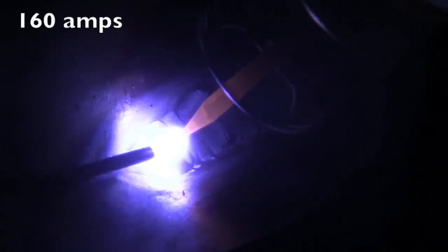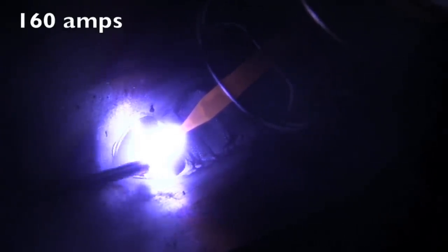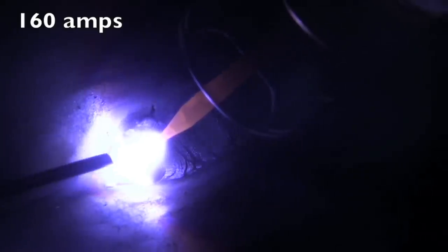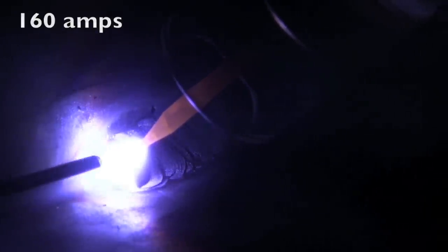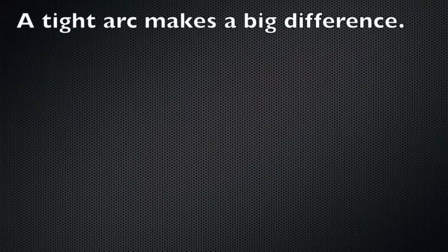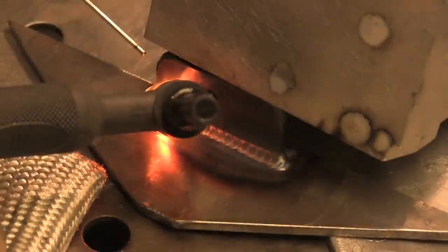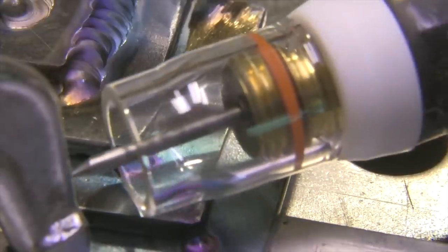Long arc makes a huge difference in TIG welding. This is 160 amps, you can see how that rod is just swimming around, balling up, puddle's swimming around. All I did here, same amperage and everything, I just tightened the arc up and that makes the rod, or lets the rod I should say, slip into the puddle, makes everything much more controllable and more confined. A lot more arc stability and that big arc plume doesn't melt the rod before it gets in the puddle.